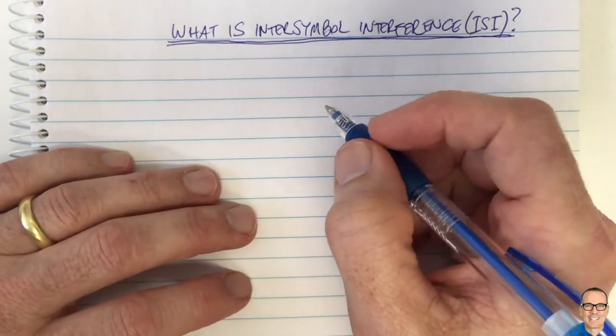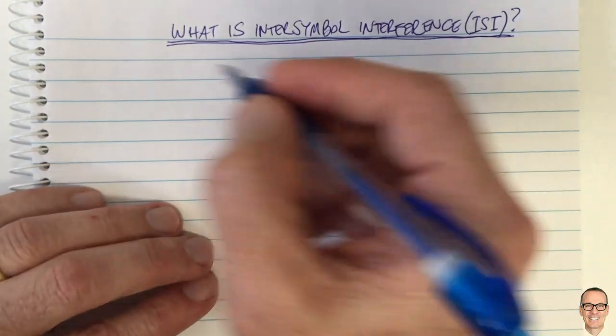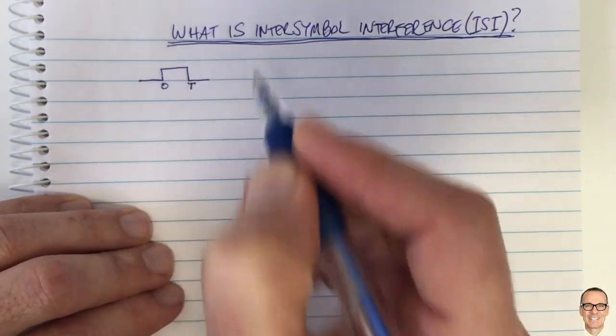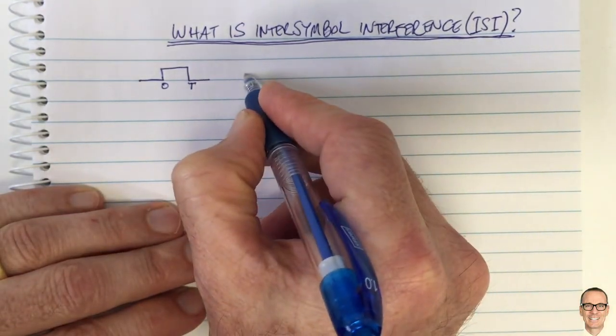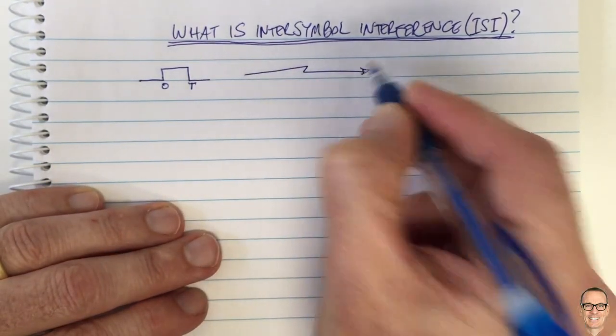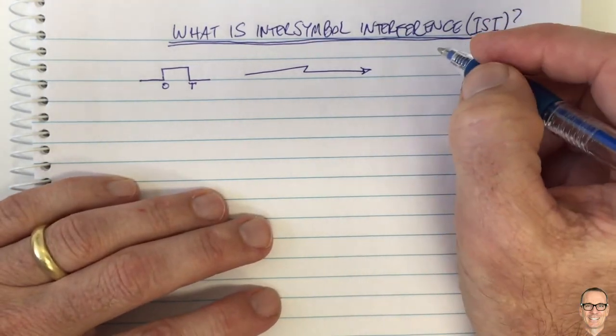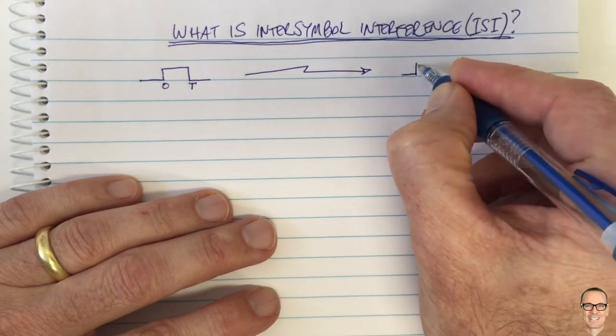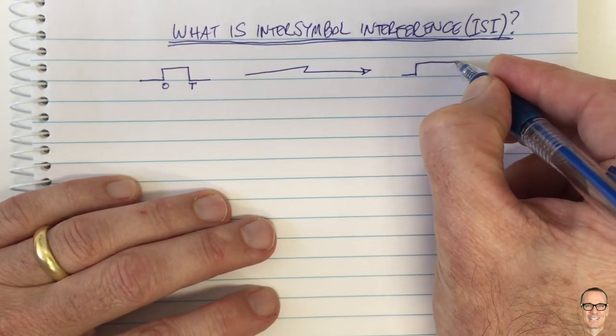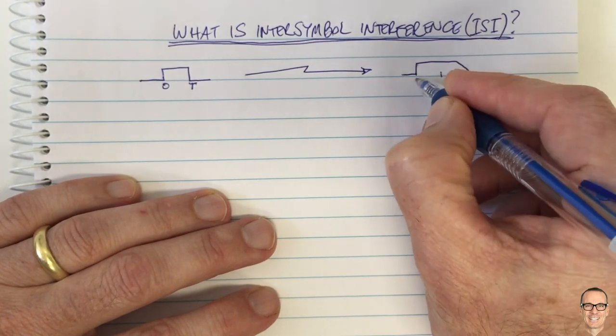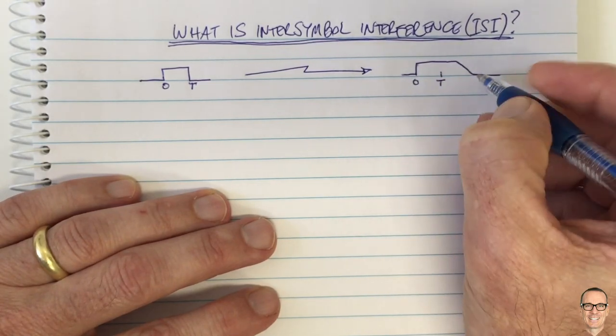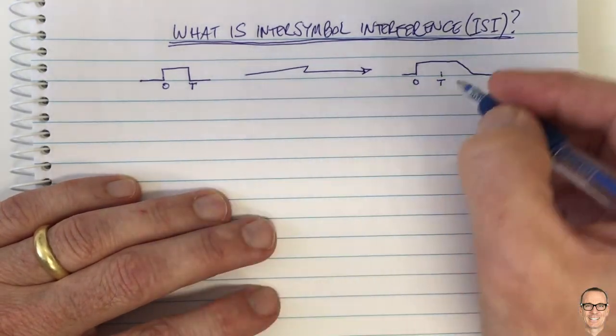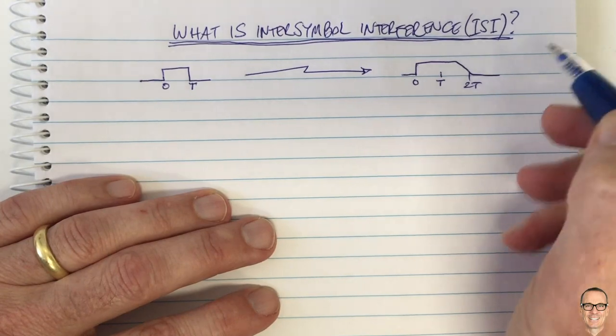Intersymbol interference in digital communication systems is when you send a signal over a finite amount of time, and by the time it's gone through the channel, which might be a wireless channel or an optical fiber or a copper wire, it gets to the other end and is somehow spread out into longer than just that period of time, interfering with the next symbol that you would want to send, which starts at T and goes till 2T.